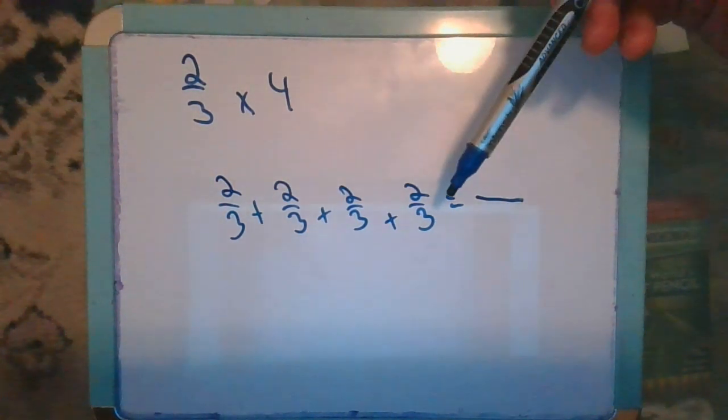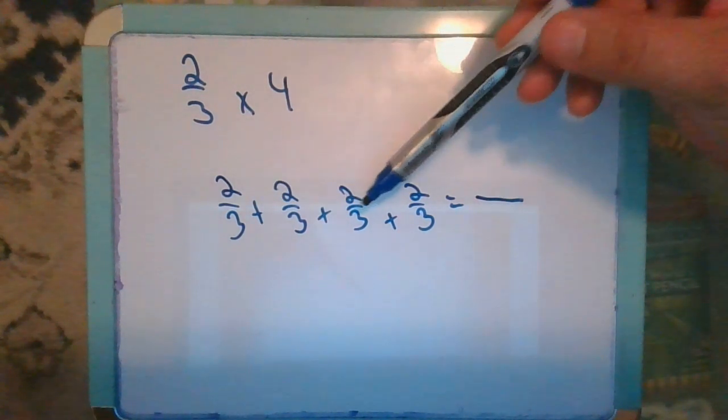So I have two-thirds, two-thirds, two-thirds, two-thirds. When I add all those up, I'll have two, four, six, eight.